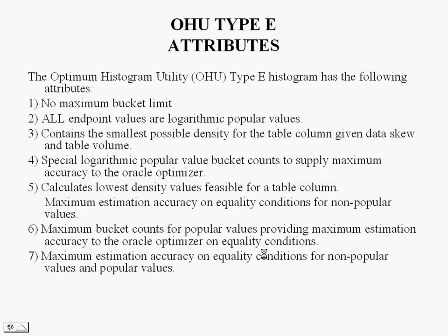OSU Type B attributes: again, no maximum bucket limit — currently 254 in Oracle. All endpoint values are logarithmic popular values. It contains the smallest possible density for the table given data skew and data volume. Special logarithmic popular value bucket counts supply maximum accuracy to the Oracle Optimizer and calculate the lowest density values feasible for a table column. With Type B histograms, popular value estimates by the Oracle Optimizer are dead on — like 99% of the time. The estimated cardinality will be exactly equal to the count for that popular value, which can dramatically influence how the Optimizer approaches complex and simple SQL statements.